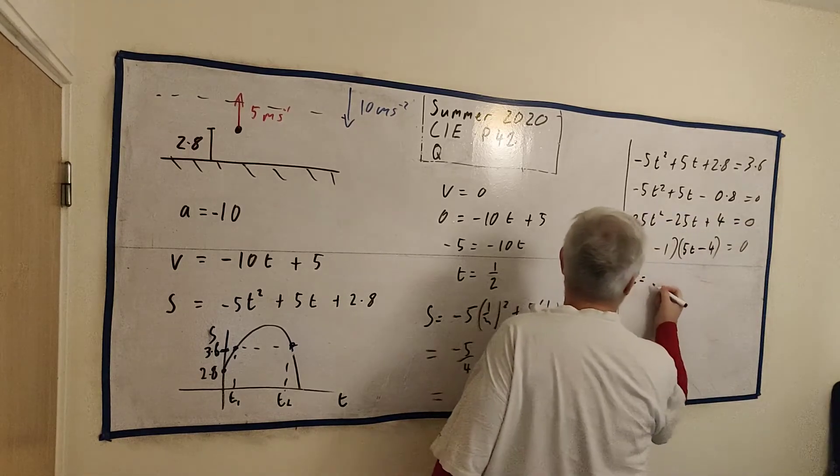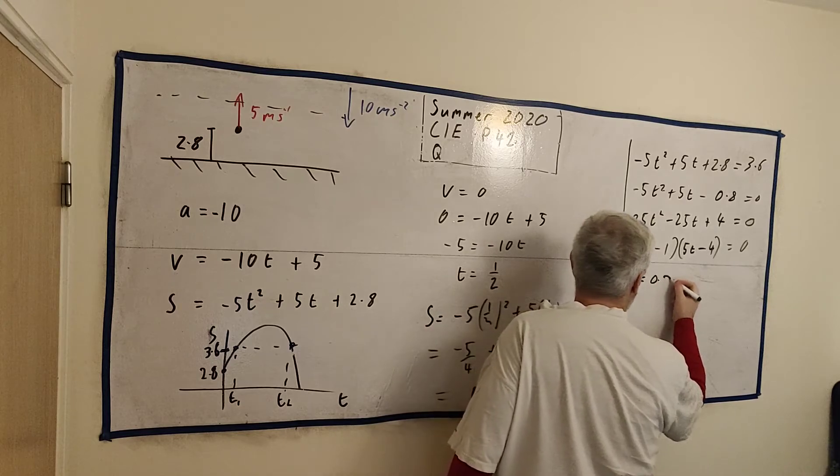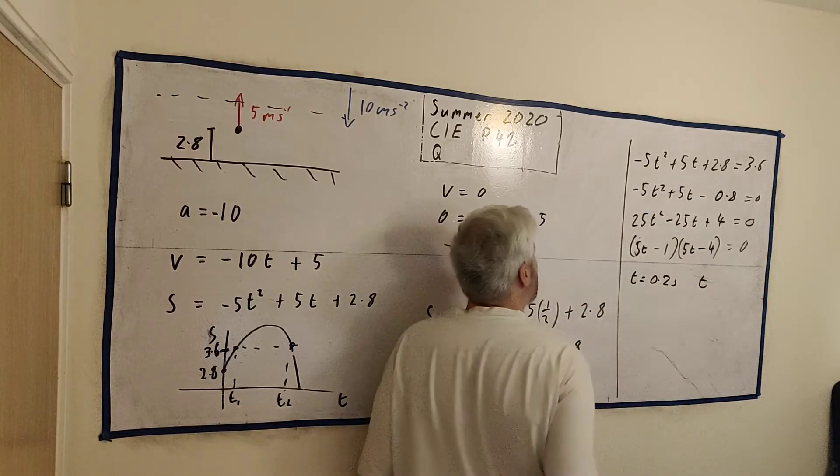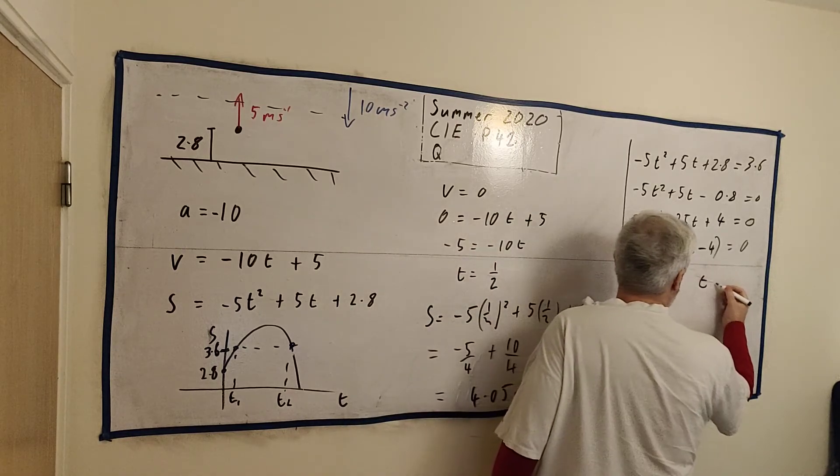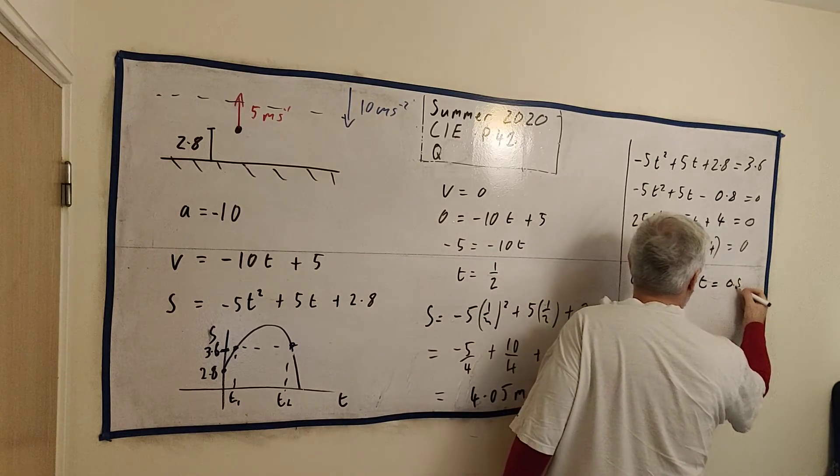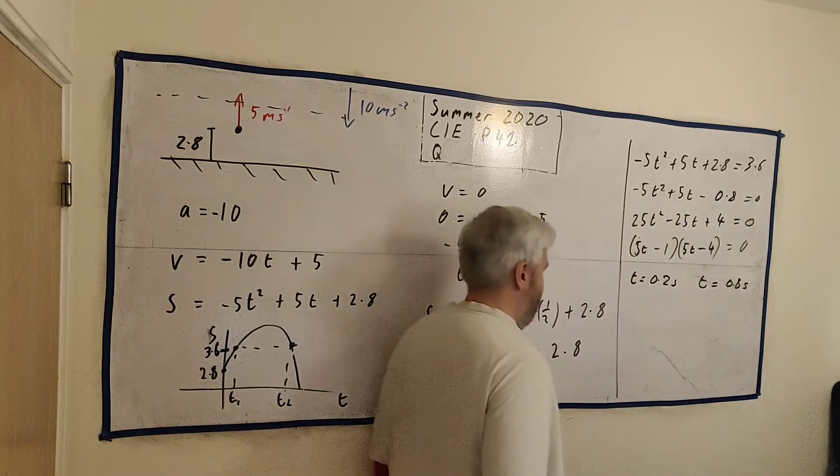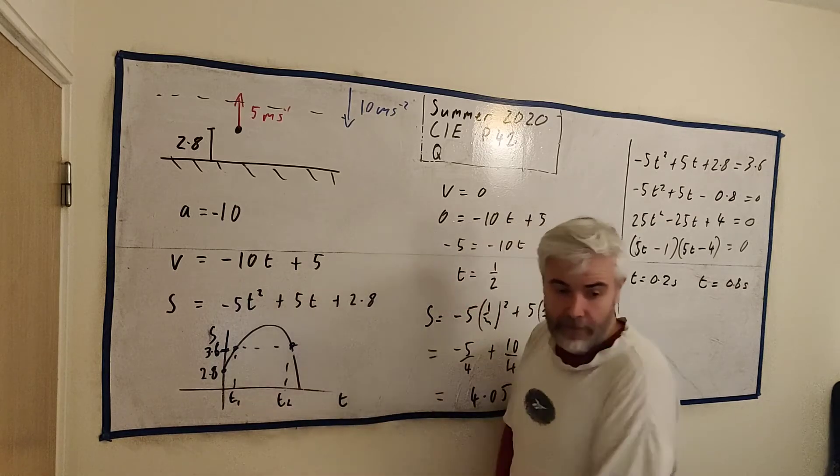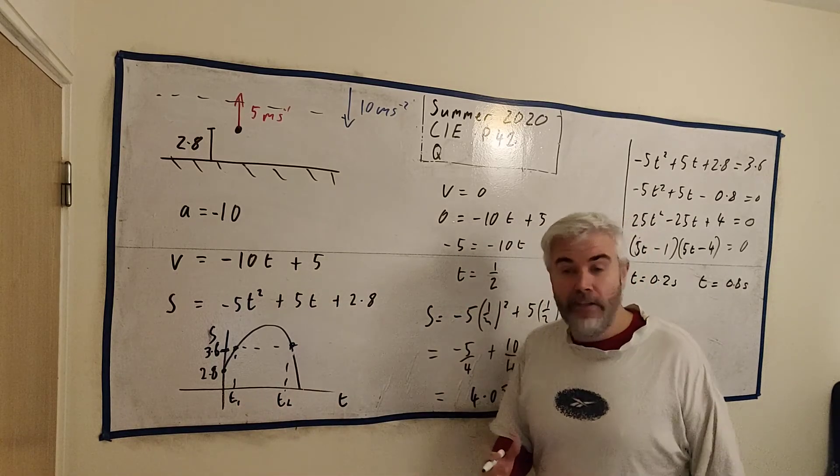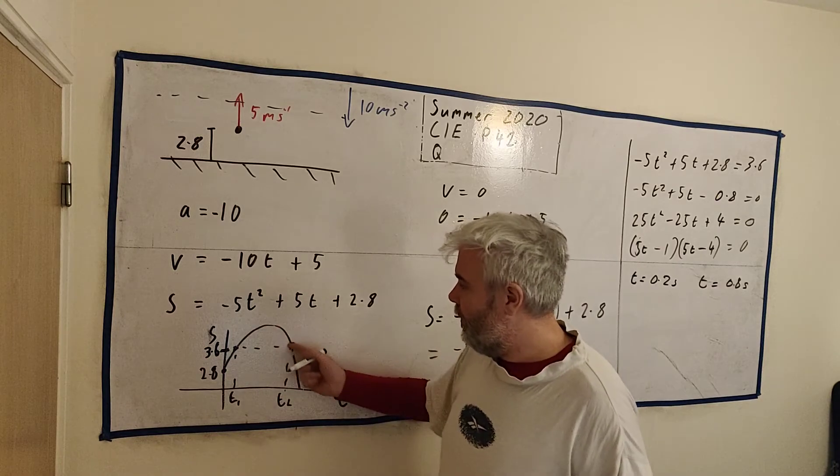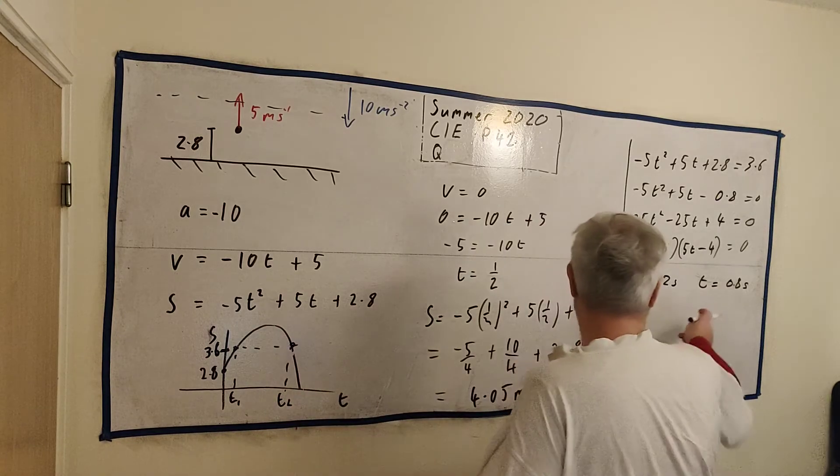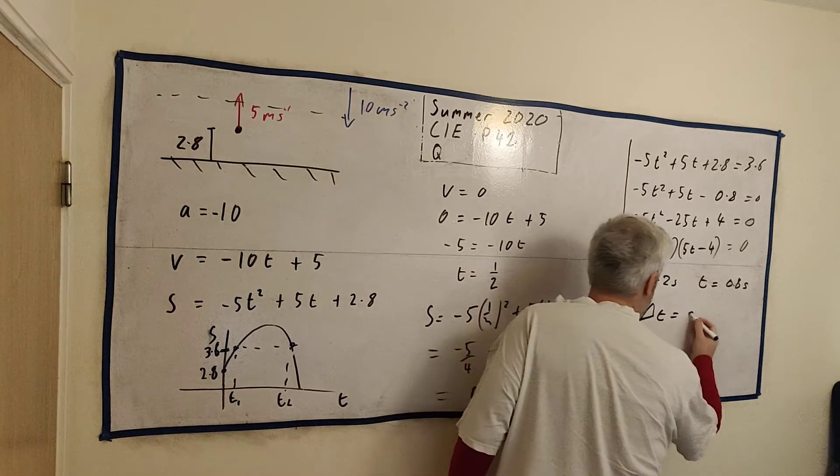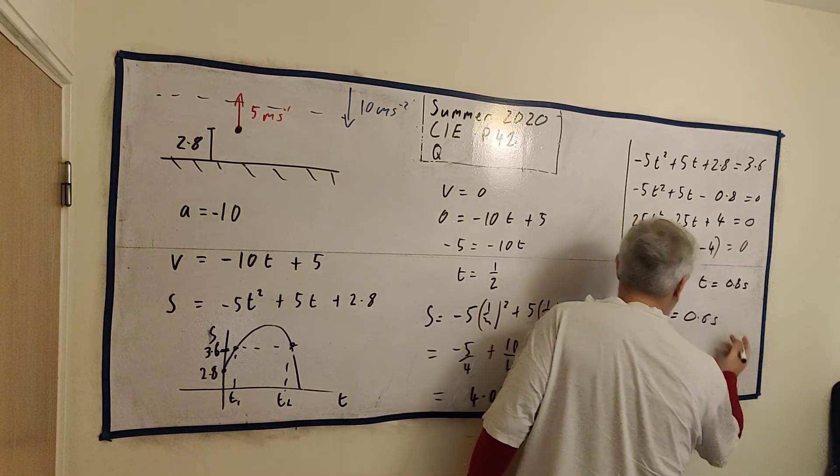So we're left with t equals 1 divided by 5, or 0.2 seconds, or we'll get t equals 4 over 5, which equals 0.8 seconds. And that's these two numbers here, 0.2 and 0.8. So to answer that question, how long is it up in the air? How long is it between here and here? Well it must be the difference of these.